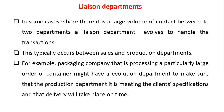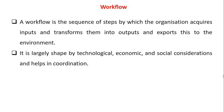Next comes the liaison department. Liaison means the communication between people or groups who work with each other. In cases where there is a large volume of contact between two departments, a liaison department evolves to handle the transactions. This typically occurs between sales and production departments. For example, a packaging company processing a particularly large order might have a liaison department to make sure that the production department is meeting the client's specifications and that deliveries will take place on time. Last comes workflow — the sequence of steps by which the organization acquires inputs and transforms them into outputs and exports to the environment. It is largely shaped by technological, economic and social considerations and helps in coordination.